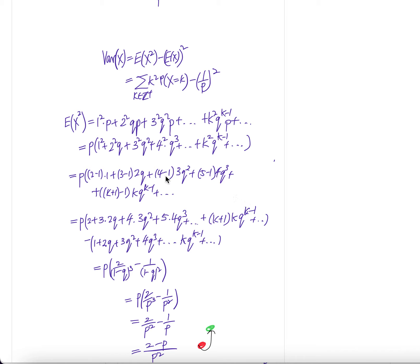Now, you can write 1 square as 2 minus 1, 2 square as 3 minus 1 times 2, 3 square is 4 minus 1 times 3, and then 4 square is 5 minus 1 times 4, q to the power 3 plus dot dot dot.